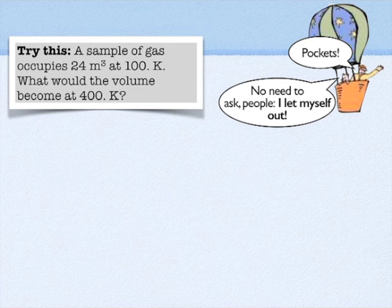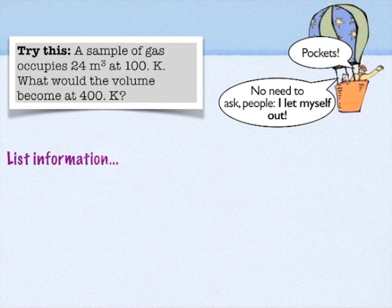We've got a sample of gas occupies 24 cubic meters at 100 K. What would the volume become at 400 K? If we multiply the temperature by four, we should expect that the volume should also increase by a factor of four. Notice that the temperature is in Kelvin.